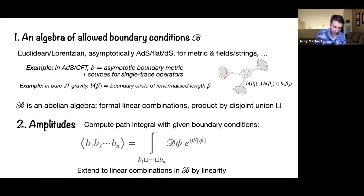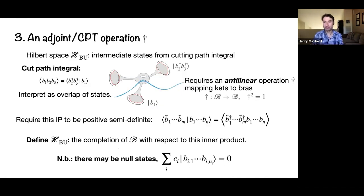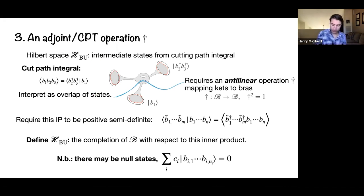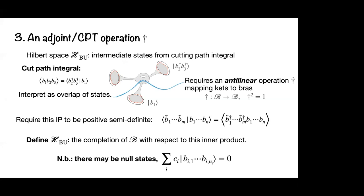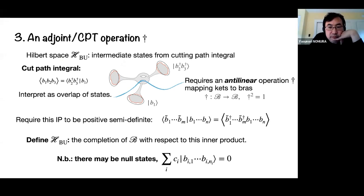This gives us our amplitudes, analogous to having correlation functions of a quantum theory. But to build a Hilbert space, there's another crucial ingredient I want to make explicit: you have to make an extra choice—the adjoint operation, or a notion of CPT conjugation.